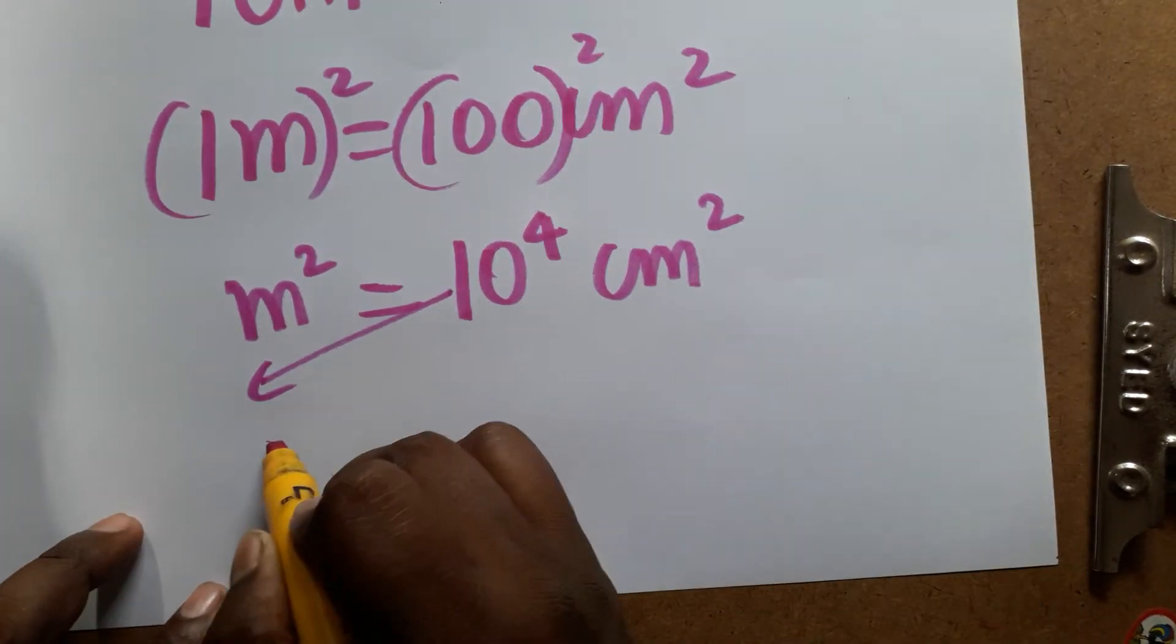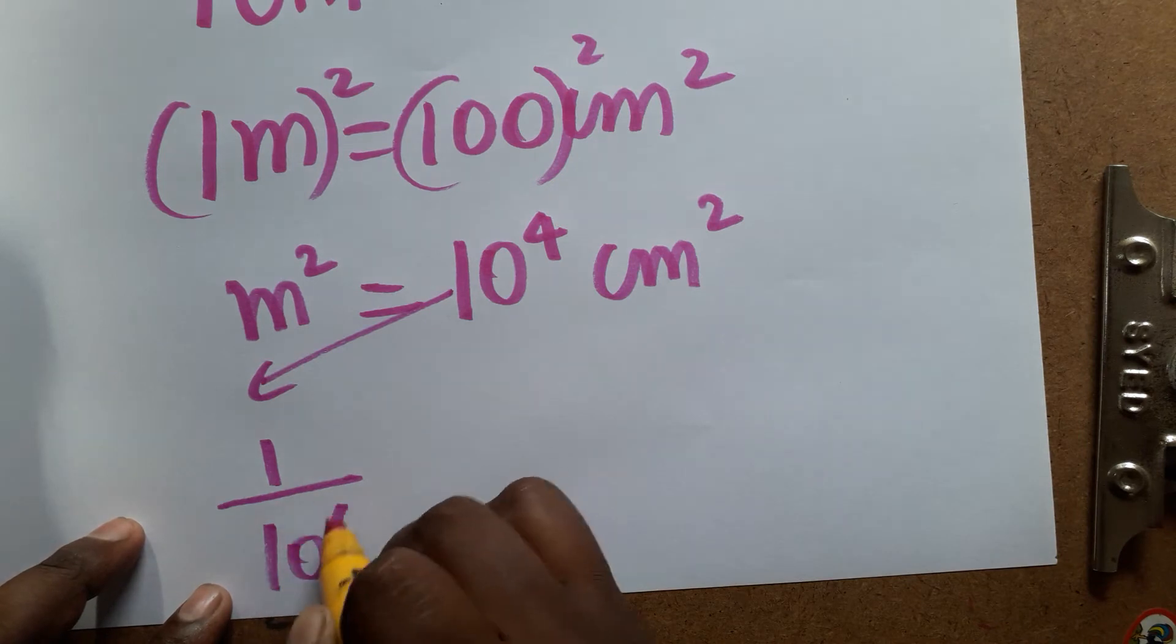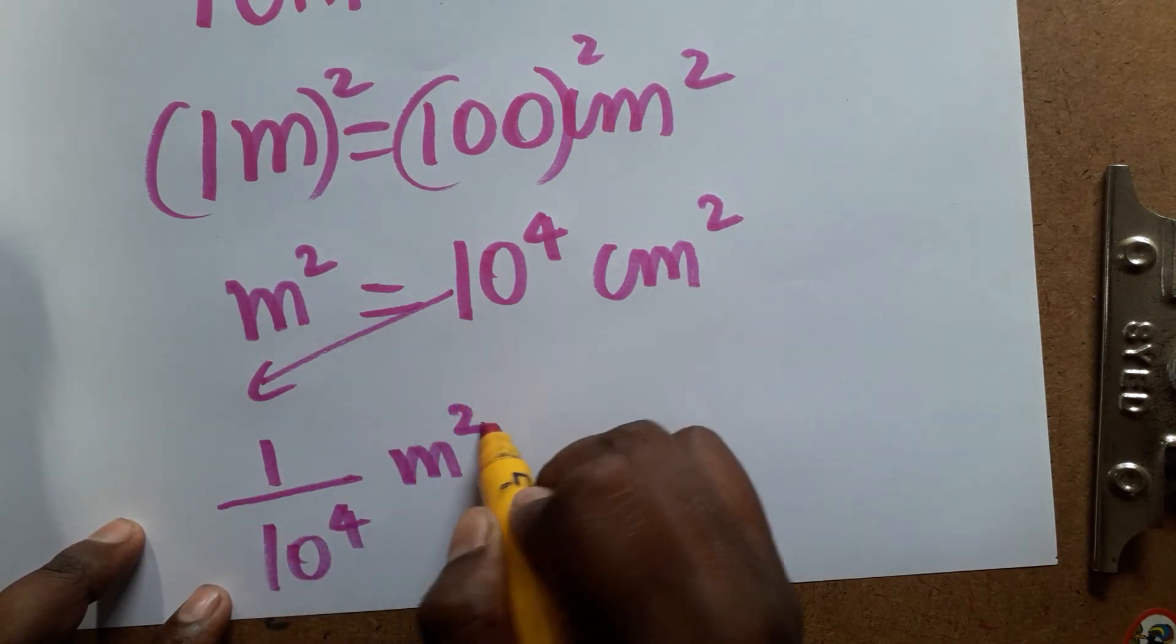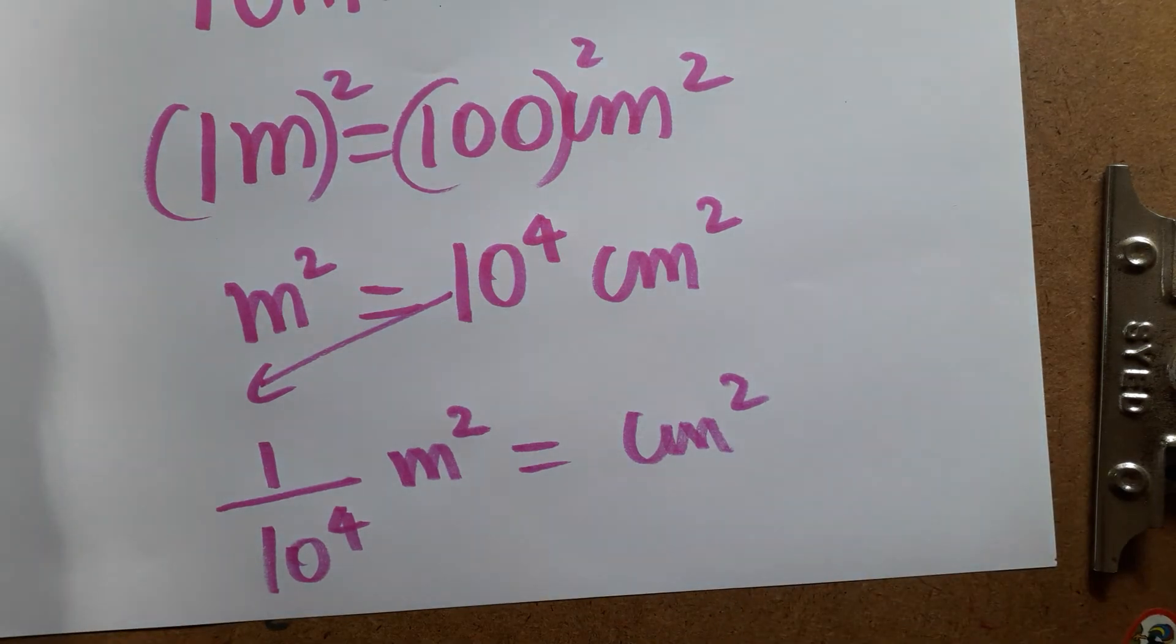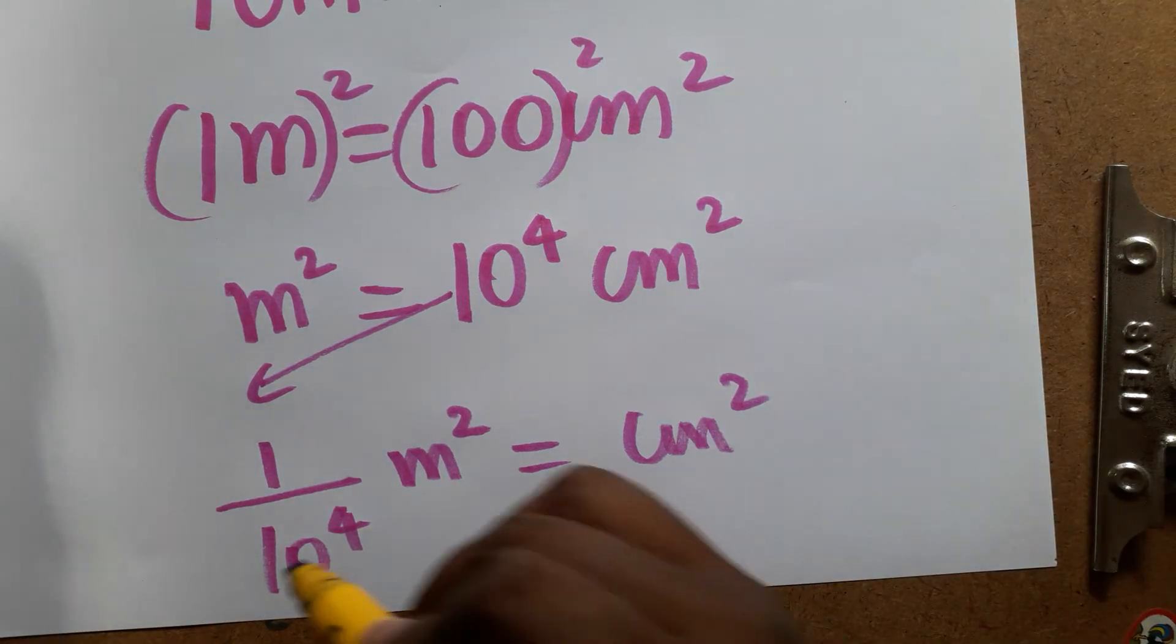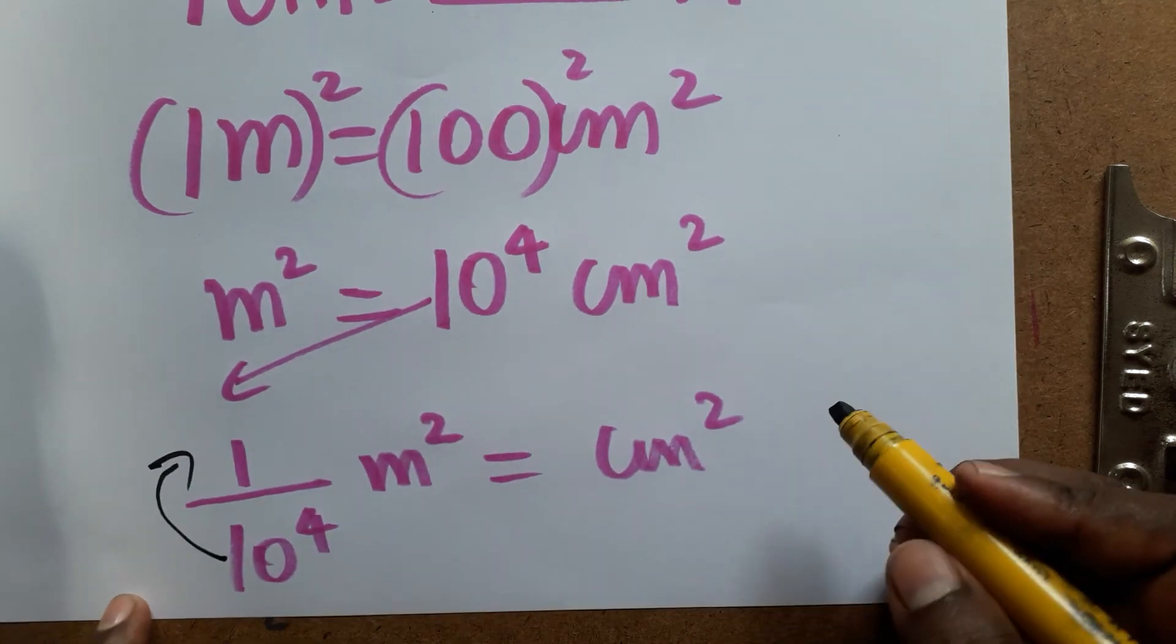10 to the power of 4 as a denominator. So 1 divided by 10 to the power of 4 meter squared is equal to centimeter squared. From the denominator, if you take 10 to the power of 4 to the numerator, you will get 10 to the power of minus 4.